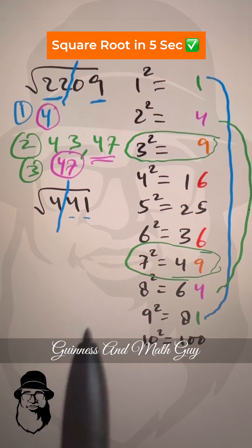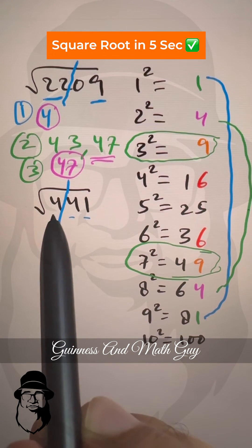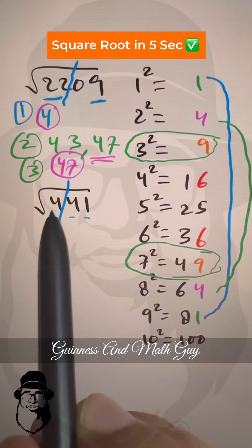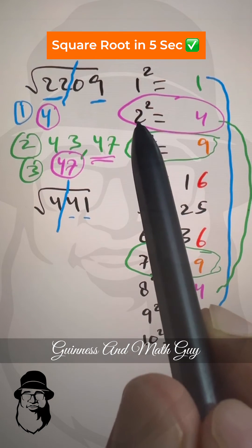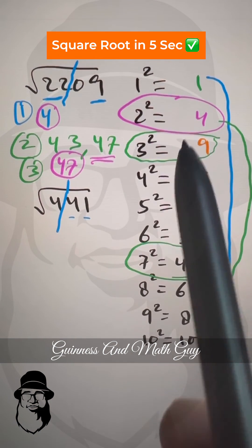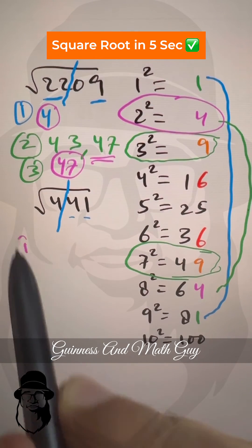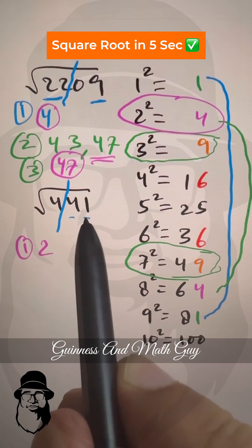Now let's do this one. The first step is we look at the left part, this is 4. We can right away see the square of 2 is 4. So the first part of the answer is 2.